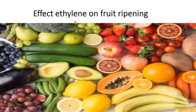Effect of ethylene on fruit ripening: ethylene decides the post-harvest life of fruits, vegetables, and cut flowers. Synthesis of ethylene varies with the maturity of the fruit, vegetables, and flowers — it is less in young buds and more in open and senescing fruits, vegetables, and flowers. Endogenous ethylene production in the style triggers wilting and senescence of the flower.